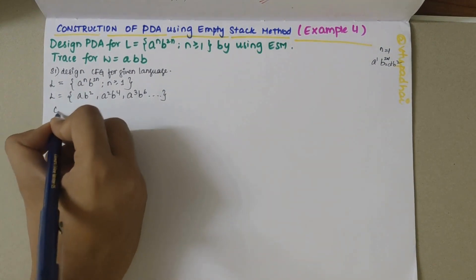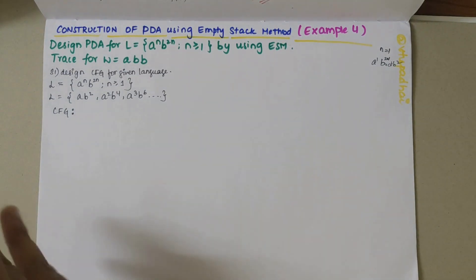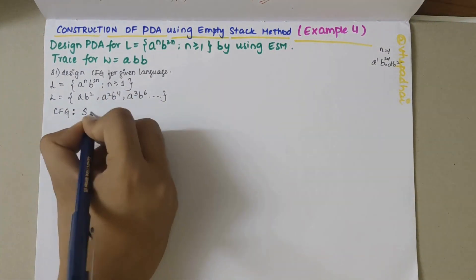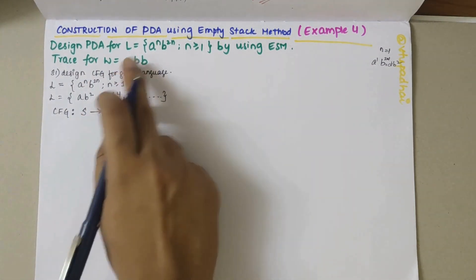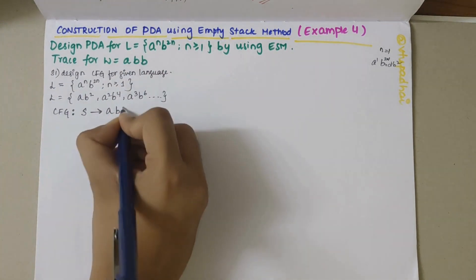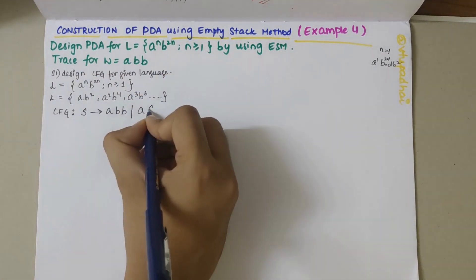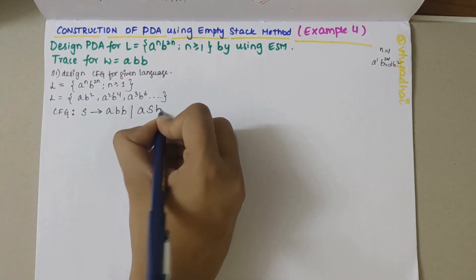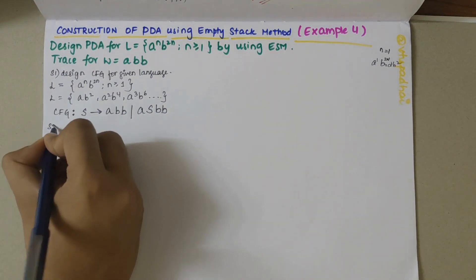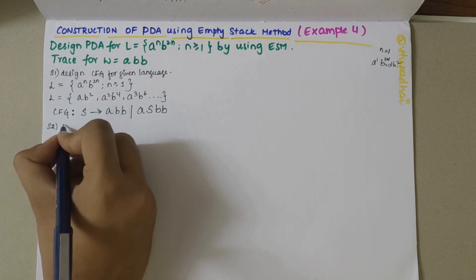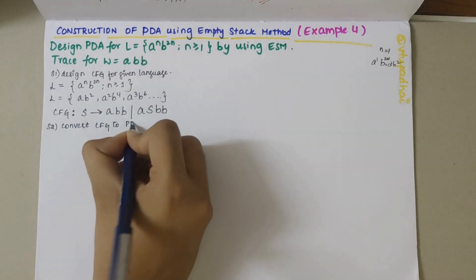Writing the context free grammar for this — we know how to design context free grammar as learned in previous videos. The minimum derivation could be S derives a followed by two b's, and then there can be n number of a's followed by b's. From this I have obtained the context free grammar. My next step is to convert the context free grammar to PDA grammar.